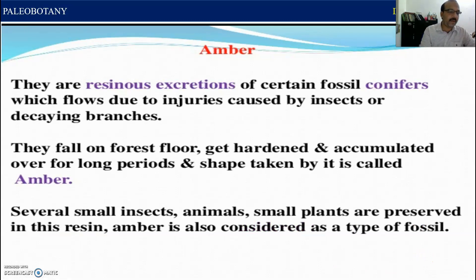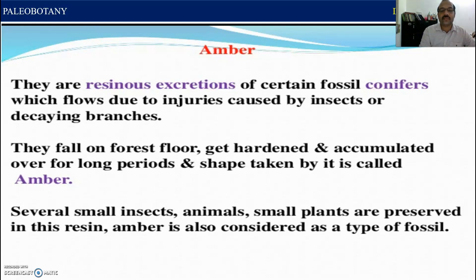Another type is called amber. They are resinous excretions of certain fossil conifers which flows due to injuries caused by insects or decaying branches. They fall on the forest floor, get hardened, and accumulate over a long period — the shape taken by this is called amber. Several small insects, animals, and small plants are preserved in this group. Amber is also considered as a type of fossil.